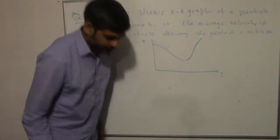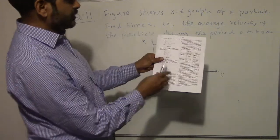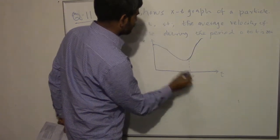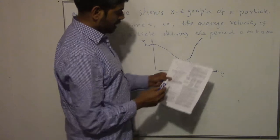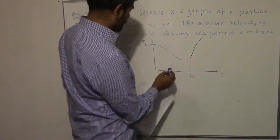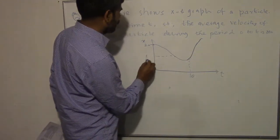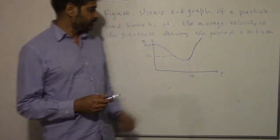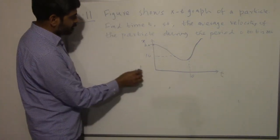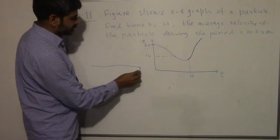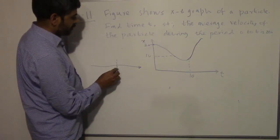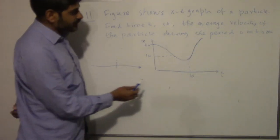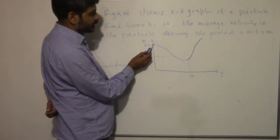This is how the graph looks. There is a point around 10 seconds here, this is 20, and somewhere around 10 units on the displacement axis. So at the start of time, at t = 0, the displacement is 20.